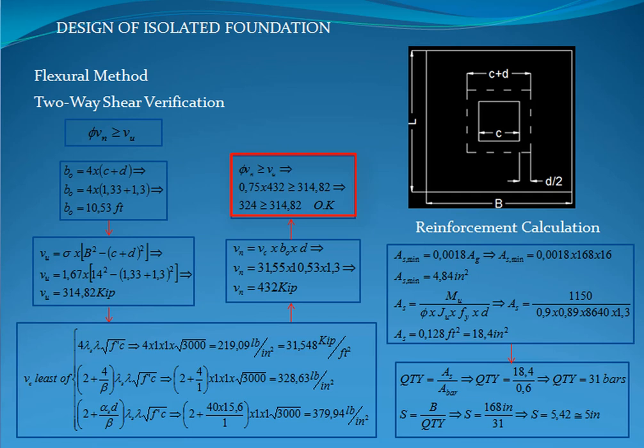Now, we proceed to calculate the required force of the foundations, starting with the footing. The minimum reinforced area required is 4.84 square inch, and the reinforced required by moment is 18.4 square inch. We take the greater. We choose used bars of 7.8 inches. The quantity of wire required is 31 bars of 7.8 inches, and the separation between bars is 5 inches.